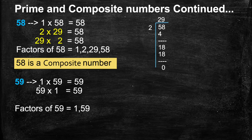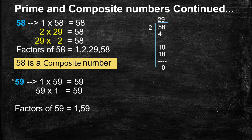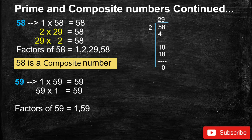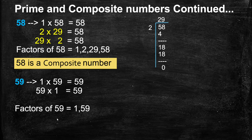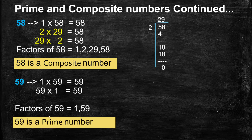Next, 59. 1 is a factor of every number, so 1 times 59 equals 59. 59 is not a multiple of 2 or 3. There is no combination of 59 in the multiplication tables from 2 to 12 — remember, this method is only for 2-digit results, not 3-digit. At last, 59 times 1 equals 59. Factors of 59: 1 and 59. Since 59 has only 2 factors, 59 is a prime number.